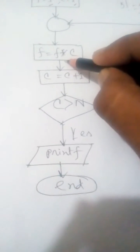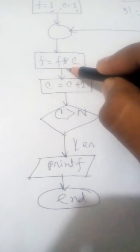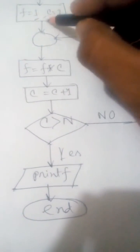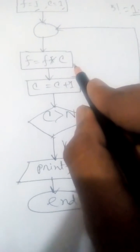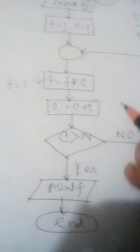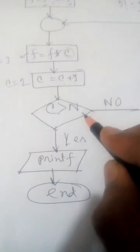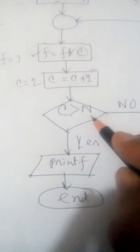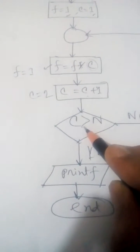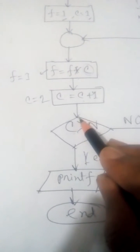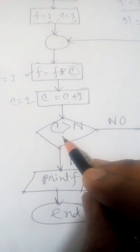Then we go to the next step: f equals to f × c. Initially f equals to 1, so f = 1 × 1, which means f equals to 1. Then we increment c: c plus 1. Initially c equals to 1, so c becomes 2. We then make a decision: if c is greater than n, the statement is right and we go yes and print f; if wrong we go no and reconnect to repeat the loop.